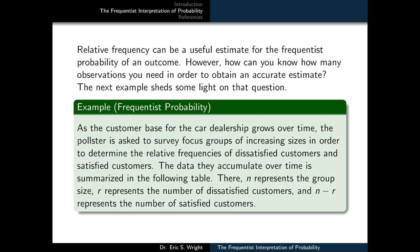Relative frequency can be a useful estimate for the frequentist probability of an outcome. However, how can we know how many observations we need to make in order to obtain an accurate estimate? This next example sheds some light on that question.